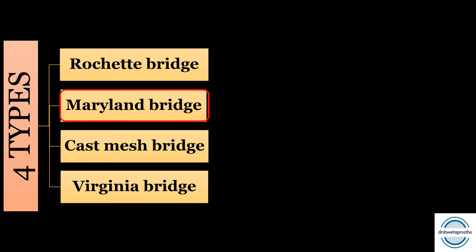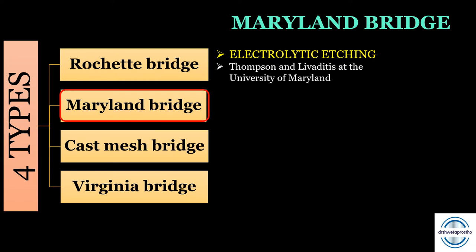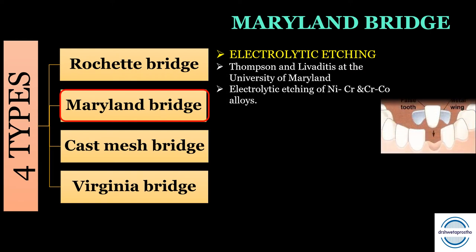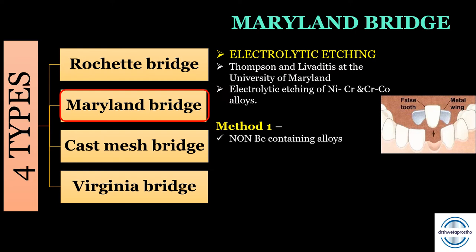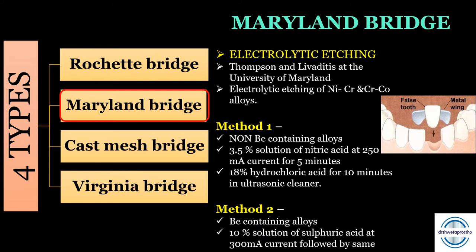Second are the Maryland bridges. Instead of perforations, the concept of electrolytic etching was introduced by Thompson and Livaditis at the University of Maryland — hence the name. They developed the technique for electrolytic etching of nickel-chromium and cobalt-chromium alloys. Two methods were used: Method 1 for non-beryllium alloys used 3.5% nitric acid at 250 milliampere current for 5 minutes, followed by 18% hydrochloric acid for 10 minutes in an ultrasonic cleaner.